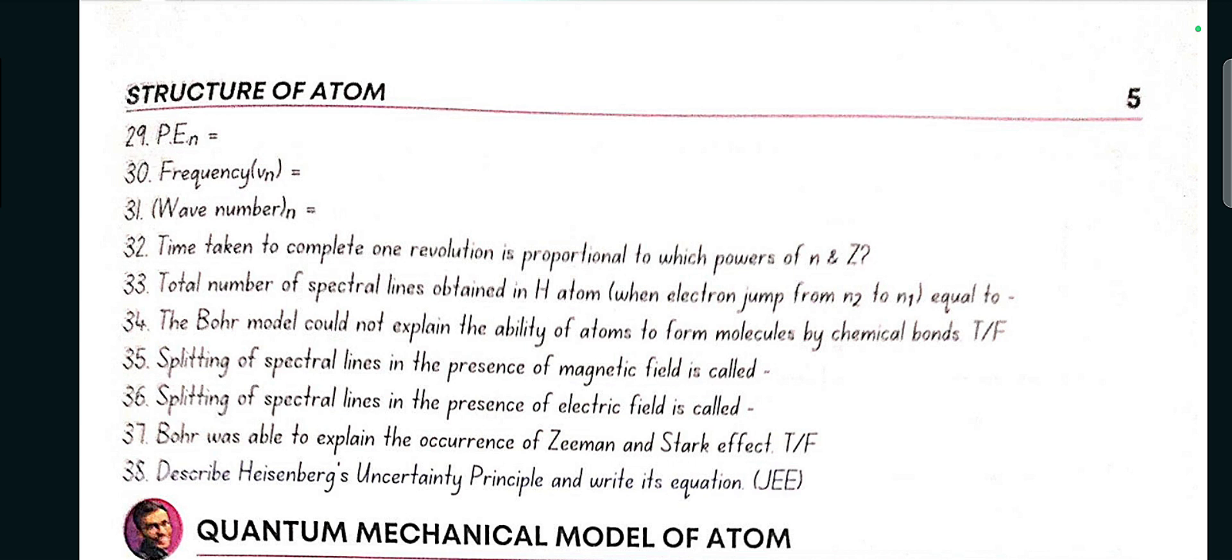Time taken to complete one revolution is proportional to n cube by z square. Total number of spectral lines obtained in hydrogen atom when electron jumps from n2 to n1 is equal to n2 minus n1, n2 minus n1 plus 1 upon 2. The Bohr model could not explain the ability of atoms to form molecules by chemical bonds, yes true.